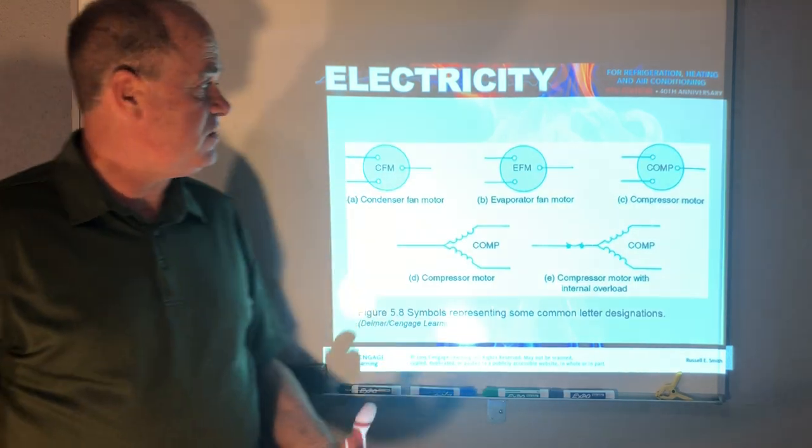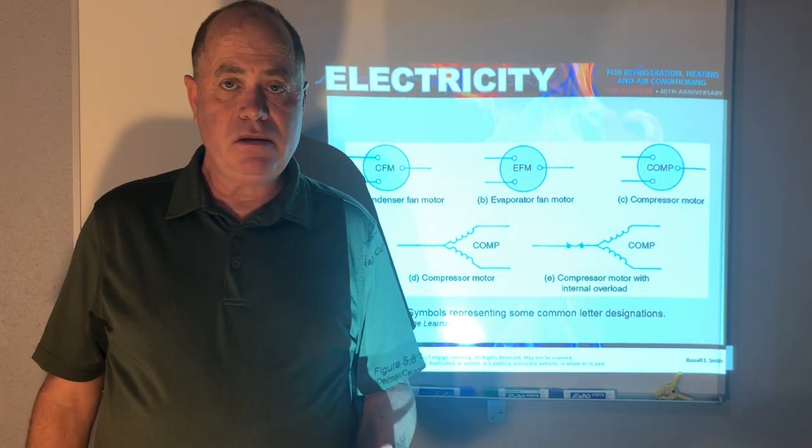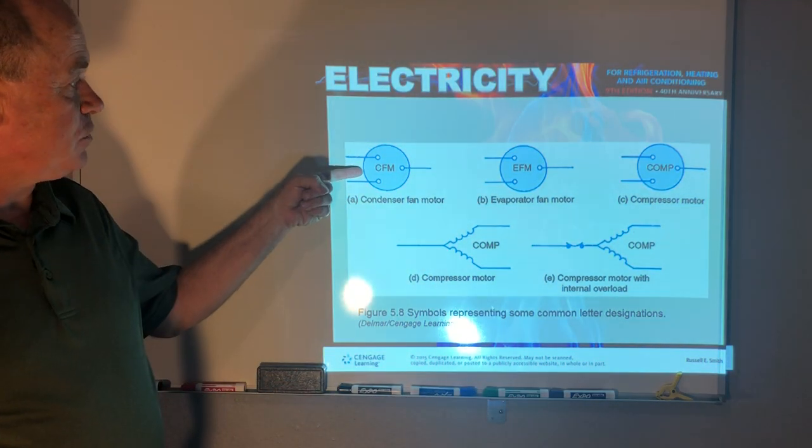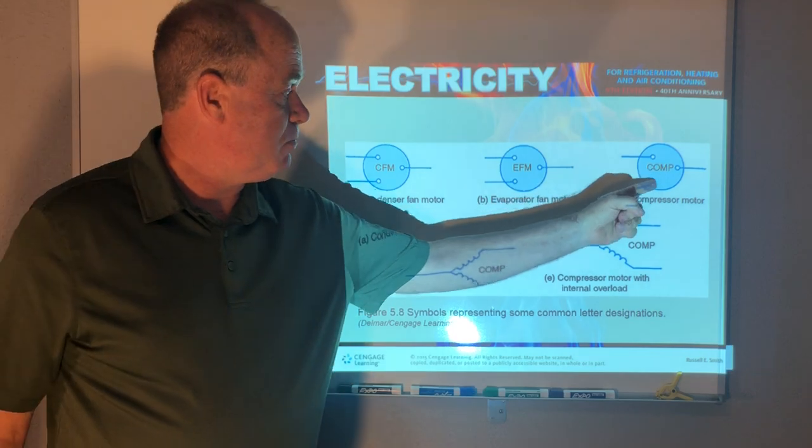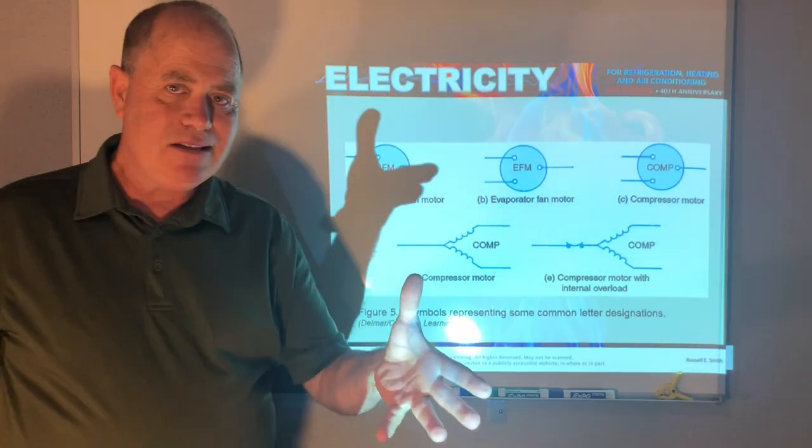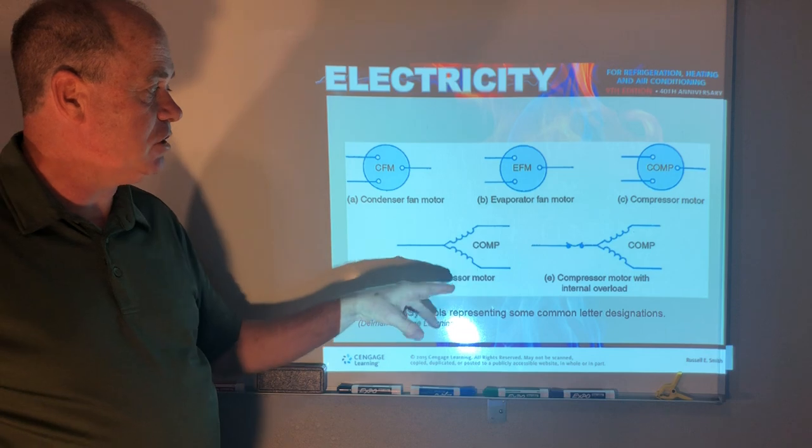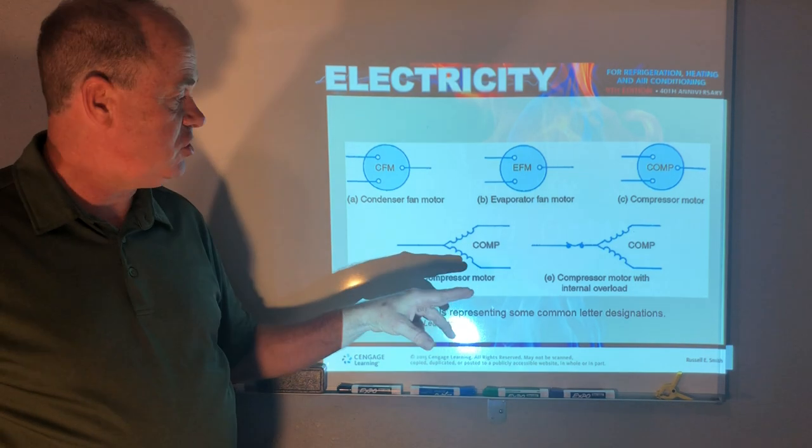These are some of the symbols for these motors. We have a condenser fan motor, evaporator fan motor, compressor fan motor, and sometimes they're just drawn like a circle, but then sometimes they're actually drawn with the winding shown.